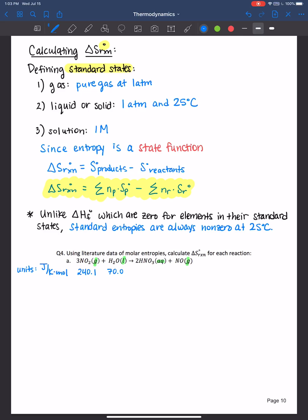So for water as a liquid, the entropy is 70. For nitric acid, it's 146. And for nitrogen monoxide, it's 210.8. And so I like to write them underneath.